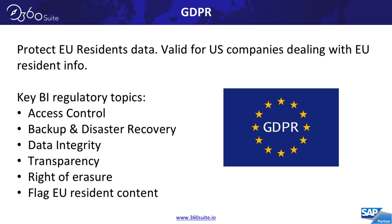This group has been quiet — we've only had two questions, so make sure to use the webinar control panel Questions section if you have any. Next topic: GDPR — protecting EU residents' data. The funny thing is it really affects many US companies as well; if you have even one EU resident in your data, you need to be GDPR compliant. The key BI regulatory topics are access control, backup and disaster recovery, data integrity, transparency, right of erasure, and the flagging of EU resident content.